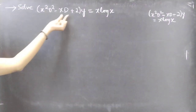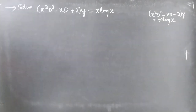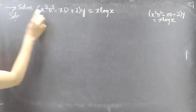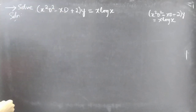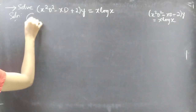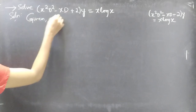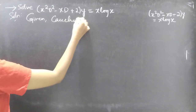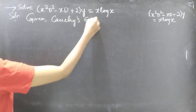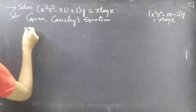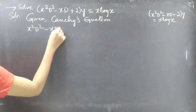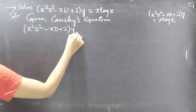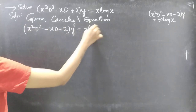Problem to solve: x squared D squared minus x D plus 2, all into y, equals x log x. So we are given a differential equation with variable coefficients, also known as a Cauchy's equation: x squared D squared minus x D plus 2 into y equals x log x.